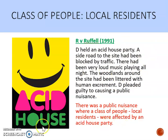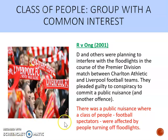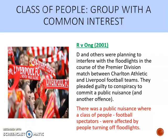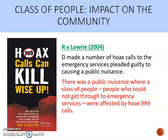In Ong, the defendant and friends planned to switch off the floodlights during a football match. This was held to be a public nuisance — the class of people being all the football spectators present. In Lowry, a defendant made hoax calls to emergency services, held to be a public nuisance. The class of people were those who couldn't get through to emergency services because of the hoax calls — and importantly, you don't need to identify specifically who those individuals are; the class can be defined broadly.